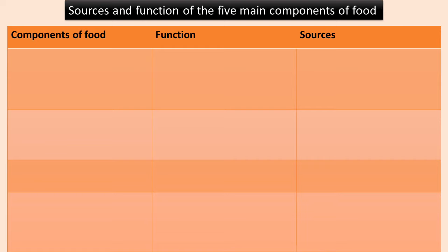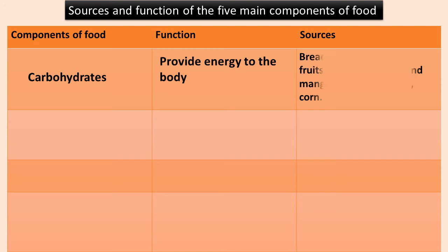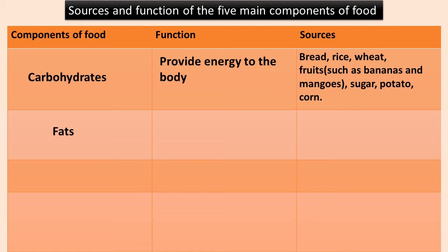Now let us learn the sources and functions of the five main components of food. Carbohydrates provide energy to the body. Bread, rice, wheat, fruits such as bananas and mangoes, sugar, potato, and corn are sources of carbohydrates.